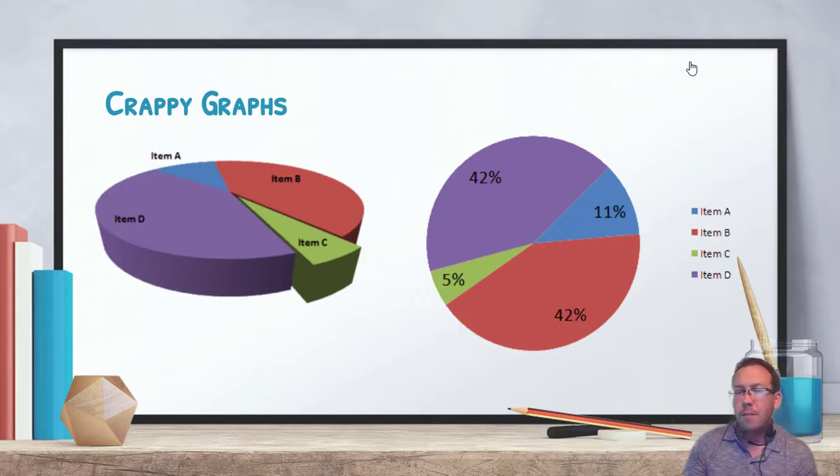Now the two-dimensional graph over here, fairly good. We've got our percentages around the wheel here. We have our items that are located off to the side. This is a better pie chart. This is the better representation of what you would want to see of the one on the left.